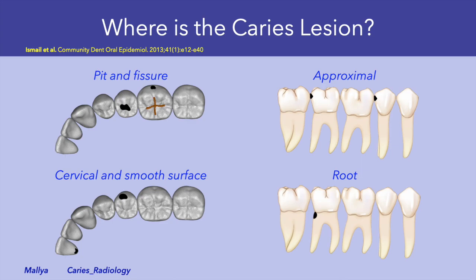A quick review of the categorization of caries depending on the tooth surface site. Pit and fissure caries occur in the pits and fissures of teeth, predominantly in the occlusal surfaces, on the buccal and lingual surfaces of the posterior teeth, and in the lingual pits of the maxillary incisors and canines. Approximal caries occurs on a tooth surface immediately adjacent to a contact point. Cervical and smooth surface caries occurs on the cervical regions and on any smooth surfaces not adjacent to a contact point. Root caries refers to caries occurring on surfaces of the root apical to the cementoenamel junction.